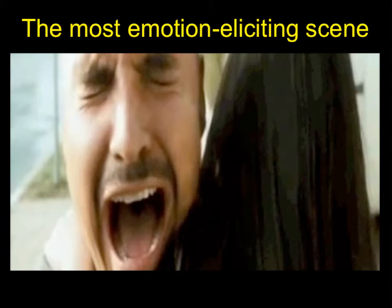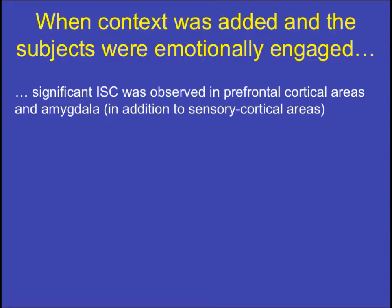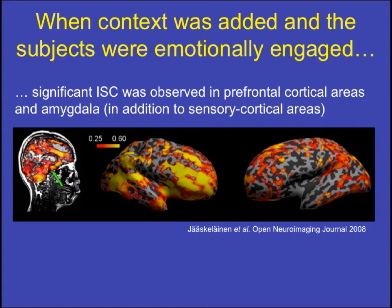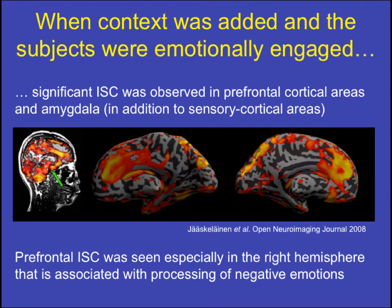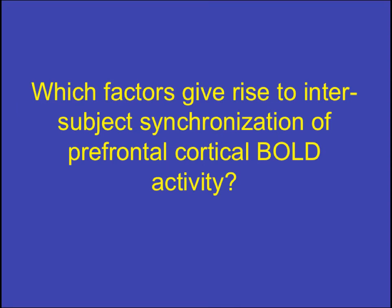When context was added and subjects were emotionally engaged, we saw significant intersubject correlations in the prefrontal cortical areas as well as the amygdala, in addition to sensory cortical areas — shown here on inflated cortical surfaces. Notably, the prefrontal intersubject correlation was seen especially in the right hemisphere, which is associated with processing negative emotion. This was a quite gloomy picture overall, with few positive parts.